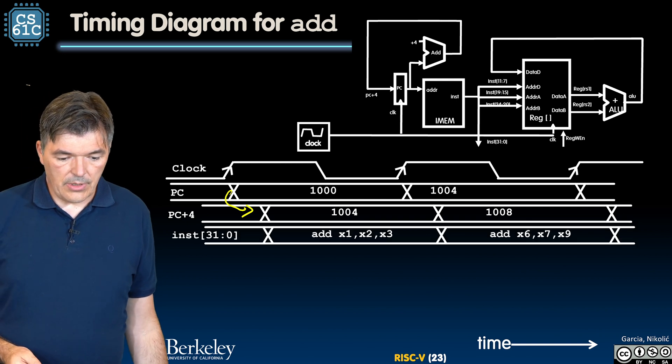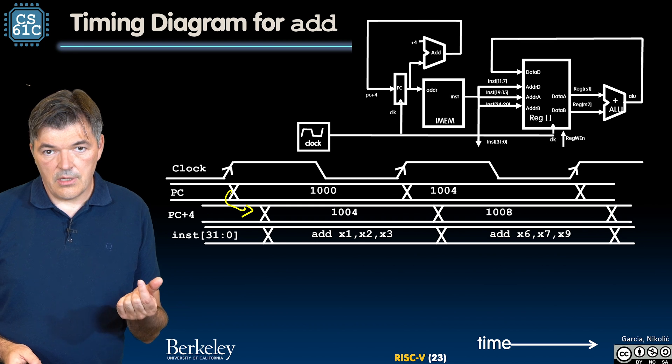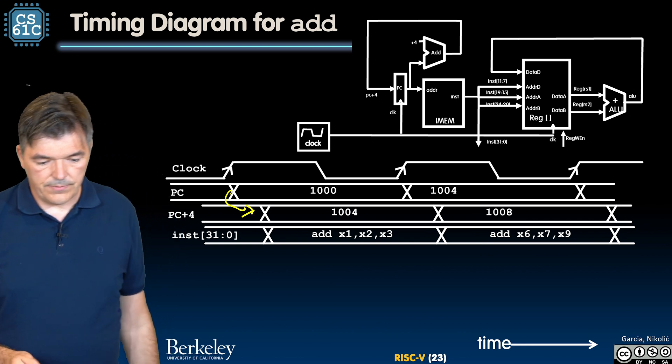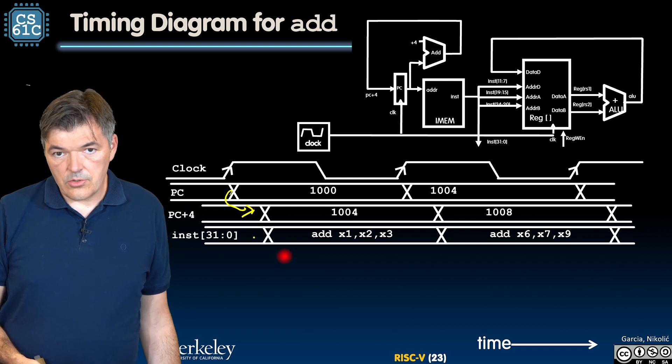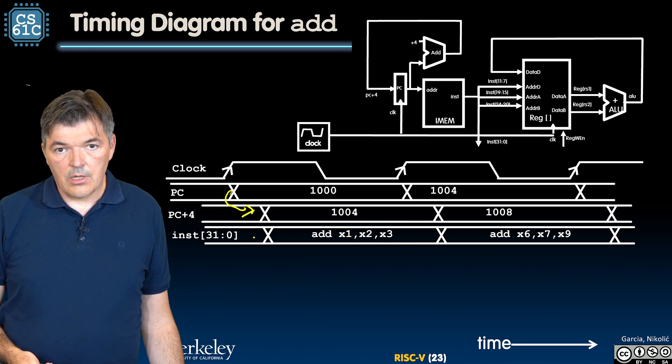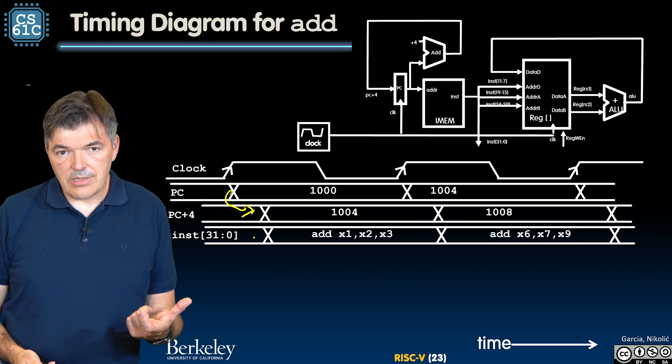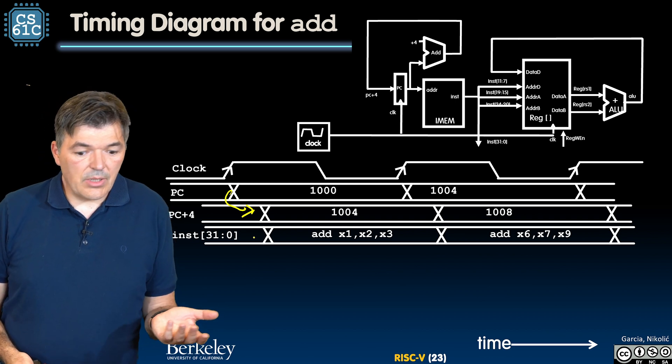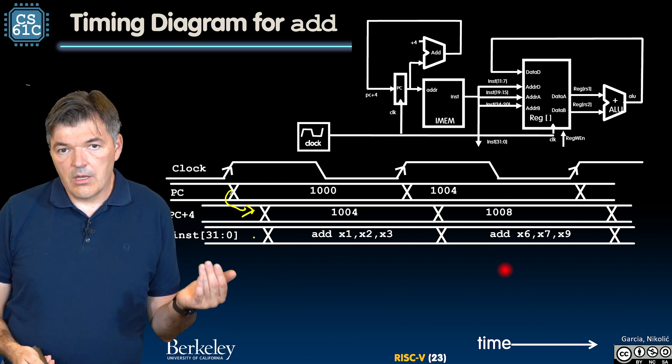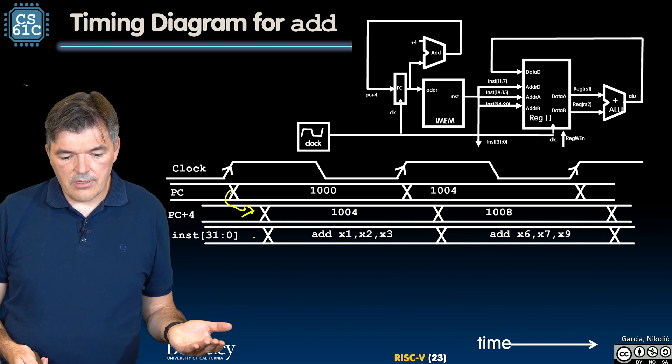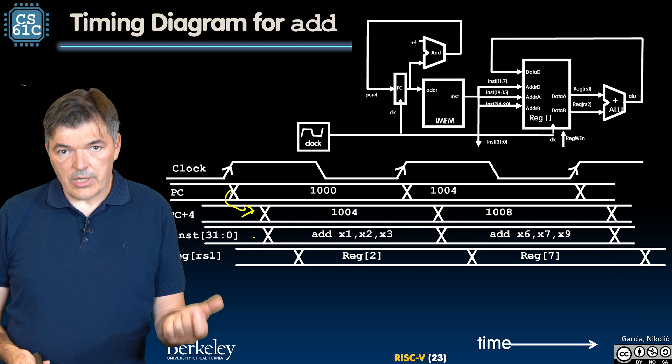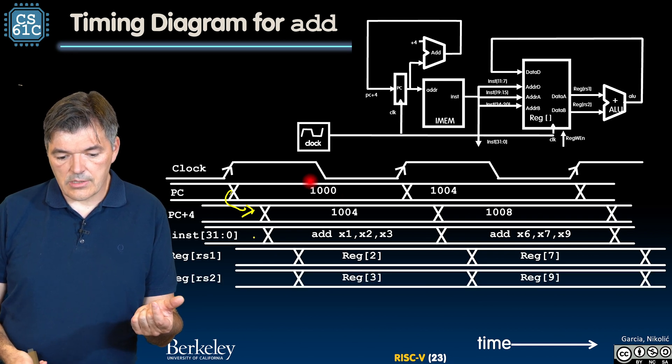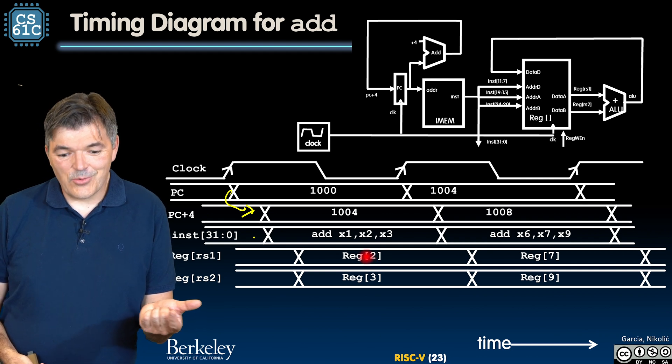The next thing that is going to happen at about the same time, after the access time of the memory, we are going to get a value at the output of the memory. That value is the new instruction. That instruction is another 32-bit binary number, but that binary number, instead of writing it as a hexadecimal value, we did another shorthand notation. That shorthand notation basically says that we disassembled it and we got add x1, x2, x3 as the value on our wires. What we need to do is to point to parts of that instruction to the addresses of the register file that contain rs1 and rs2, and we get the values x2 and x3 as the contents of the registers x2 and x3.